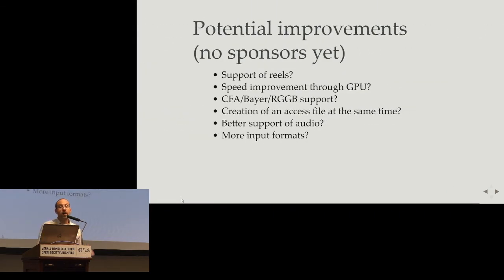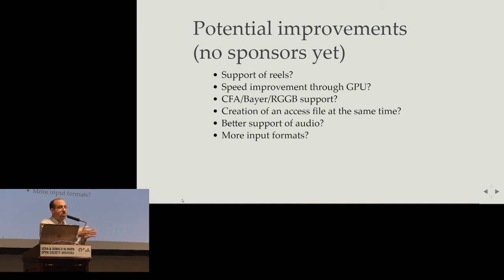We have more ideas for RAWcooked. We could add support for DPX reels — for the moment we need a directory, and if you have reels we consider them as different video tracks, not as sequential content. So if you have 10 minutes in one directory and 10 other minutes in another, for the moment it is just two video tracks. We want the file to be playable by VLC correctly — 10 minutes then 10 more minutes, for a total of 20 minutes.